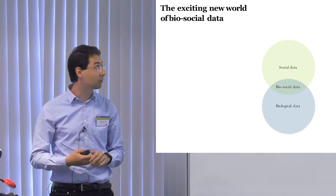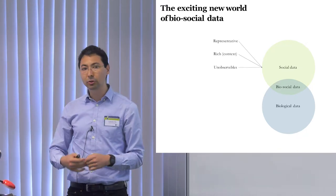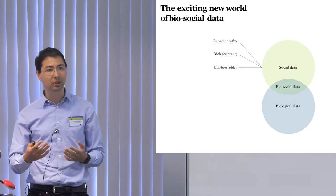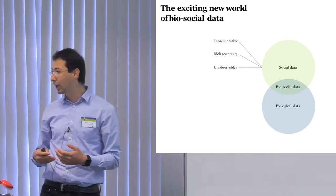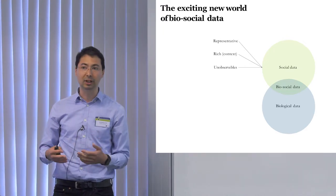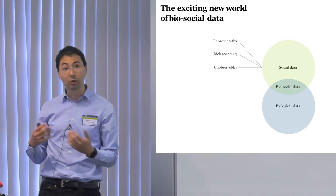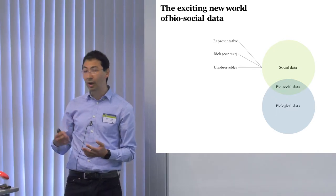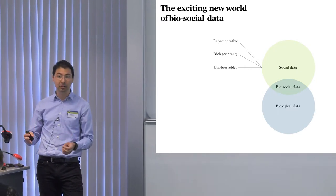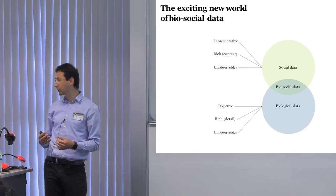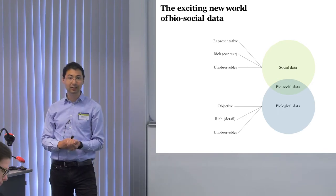Social data has some advantages. First of all, typically we like to think it's representative, so we can make inferences about the entire population. It's also rich in context — if you're a social scientist you appreciate that we measure things like values and attitudes, which are important for how people behave. We have very rich context, including for example knowing what their parents did when they were children, which might influence health outcomes, plus information from the social world and unobservables like attitudes and values that surveys are really good at measuring.